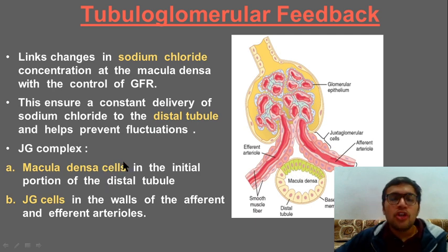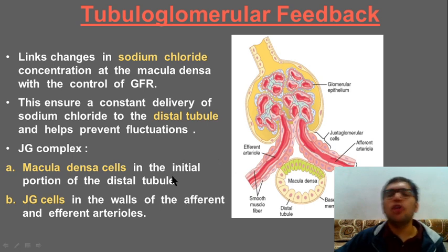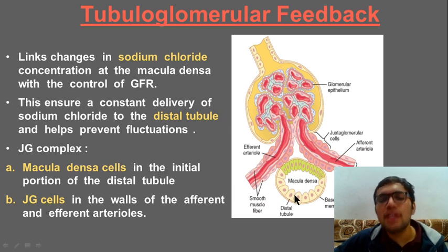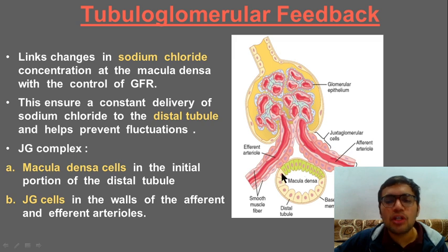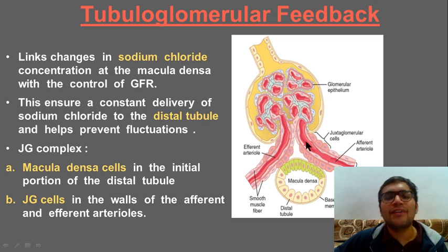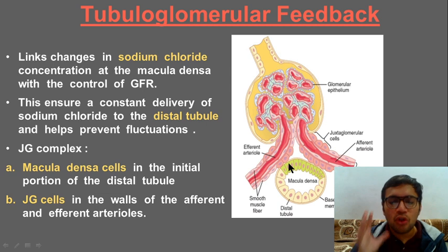The macula densa cells are located in the initial portion of your distal tubule. This is your juxtaglomerular (JG) complex — we discuss relevant anatomy whenever needed. There are also juxtaglomerular cells near the efferent and afferent arterioles, but our major focus right now is the macula densa.